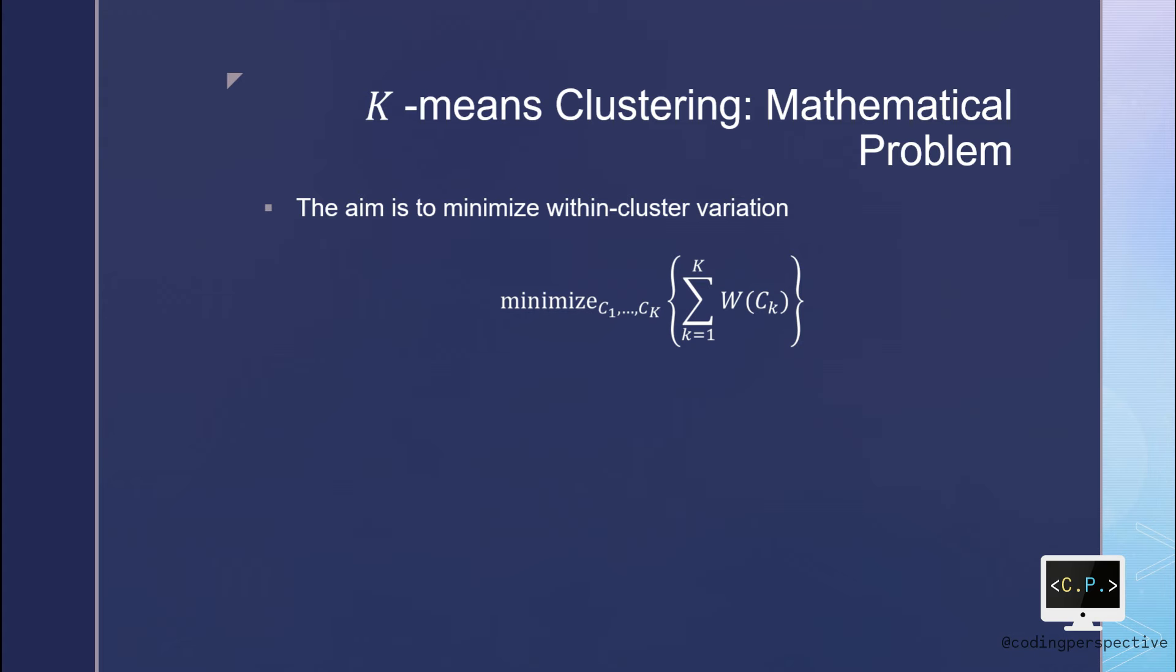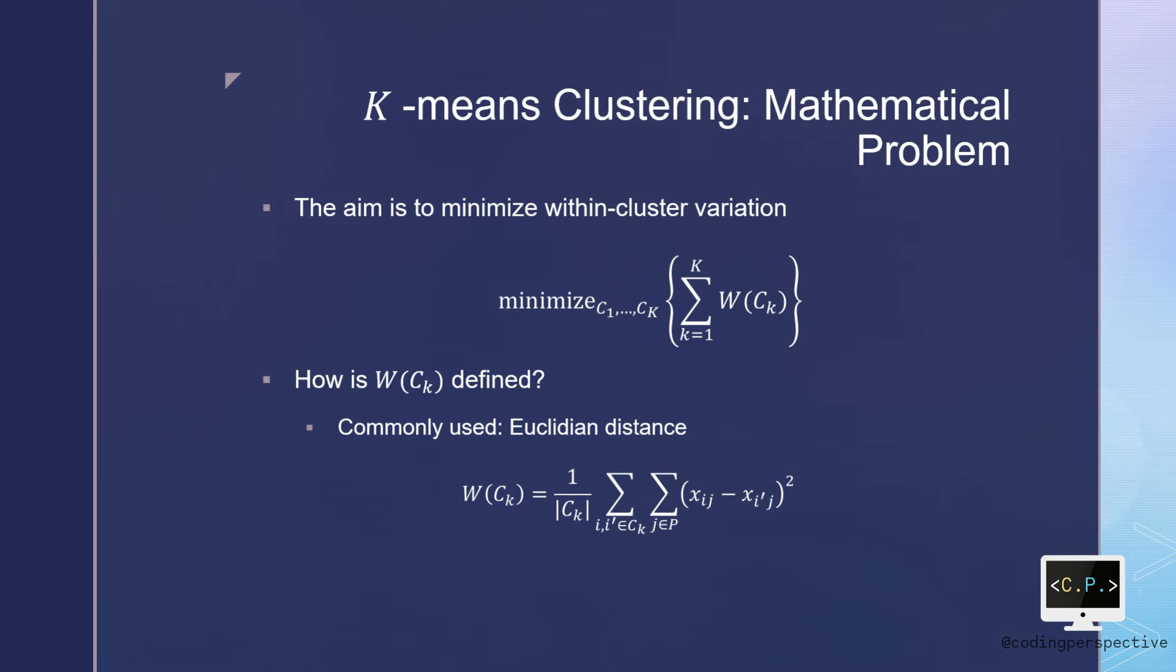The whole optimization problem depends on the definition of W(CK). There are various ways to define this measure. However, Euclidean distance is by far the most used measure as a within-cluster variation. It is defined as 1 over |CK| sum over all points in the cluster and all features of those observations (xij minus xi'j) squared.